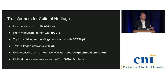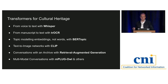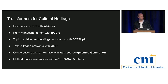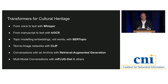We're going to talk about six ways transformers are having an impact in the GLAM sector: voice-to-text with Whisper, handwriting recognition, topic modeling on embeddings with BERTopic, text-to-image networks with CLIP, the notion of a conversation with an archive, and finally multimodal conversations engaging across the barriers of text, image, and sound.